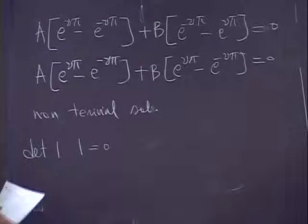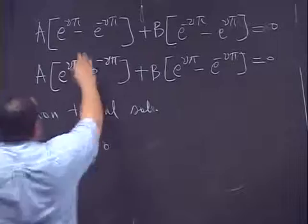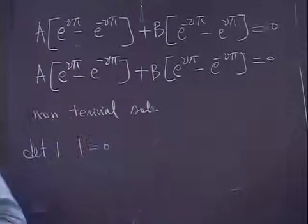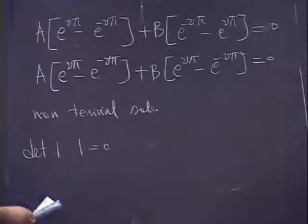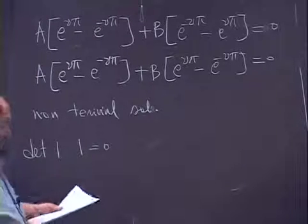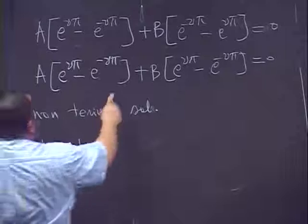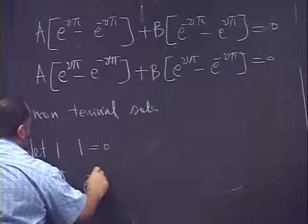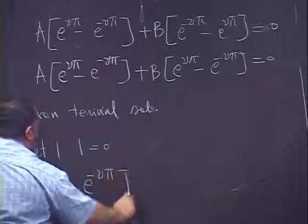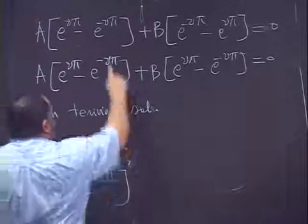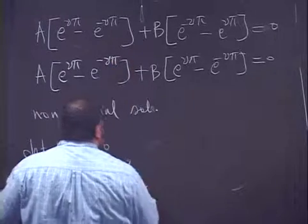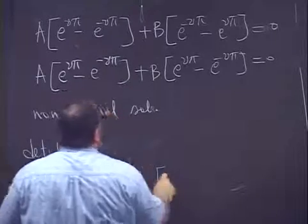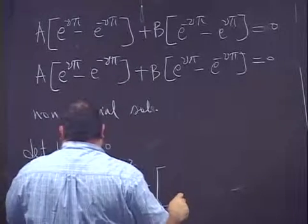This result is expected because when λ² is negative, λ is a complex number, and you do not expect a real solution in this case. Now we look at the case when λ² is positive. In this case the equation becomes Y'' + λ²Y = 0.